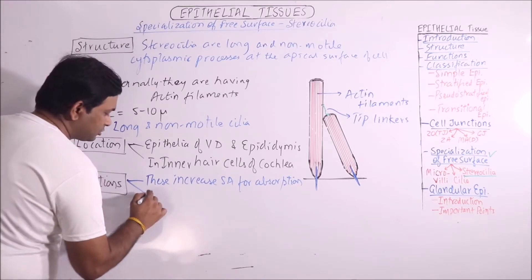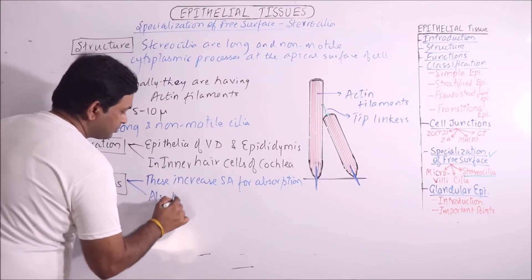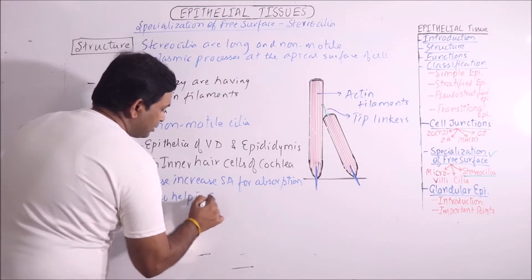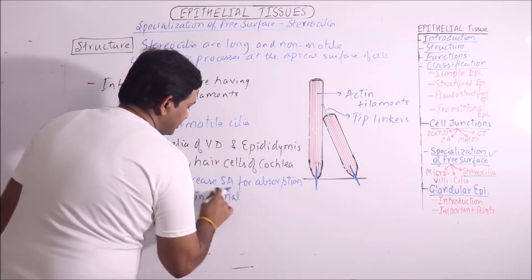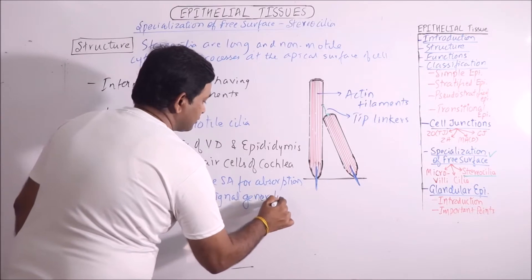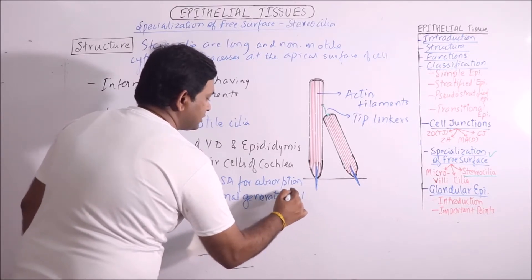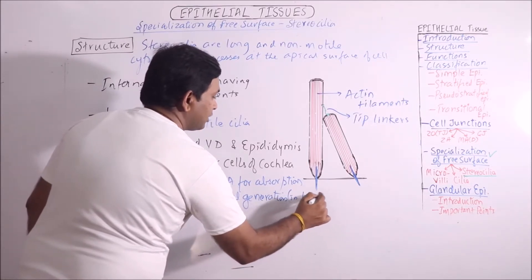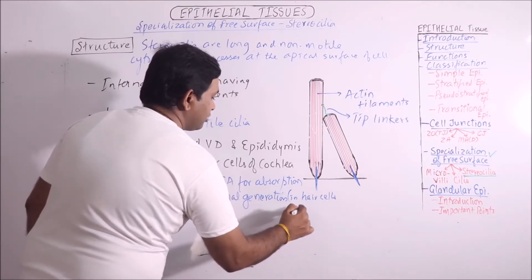And these also help in signal generation, as in hair cells in cochlea.